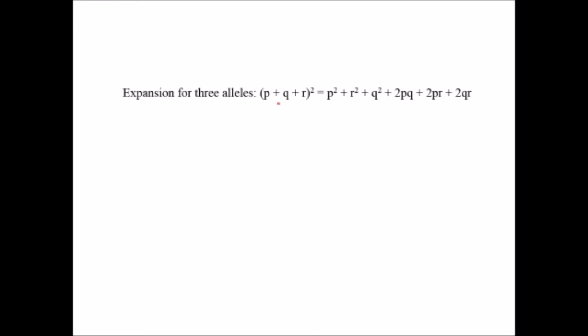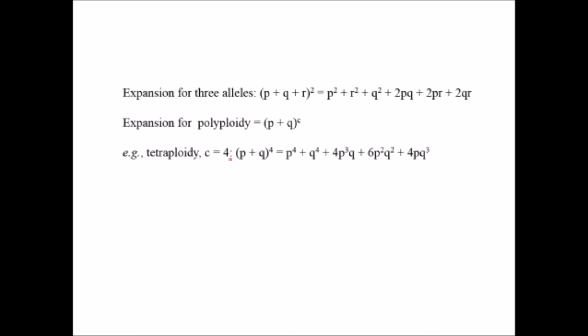For three different alleles, we express them as p, q, r, with the expanded square giving p² + q² + r² + 2pq + 2pr + 2qr. When the species is polyploid, the formula is (p + q)^c = 1, where c represents the ploidy level. For example, in tetraploidy, c = 4, so (p + q)⁴ expands to p⁴ + 4p³q + 6p²q² + 4pq³ + q⁴.